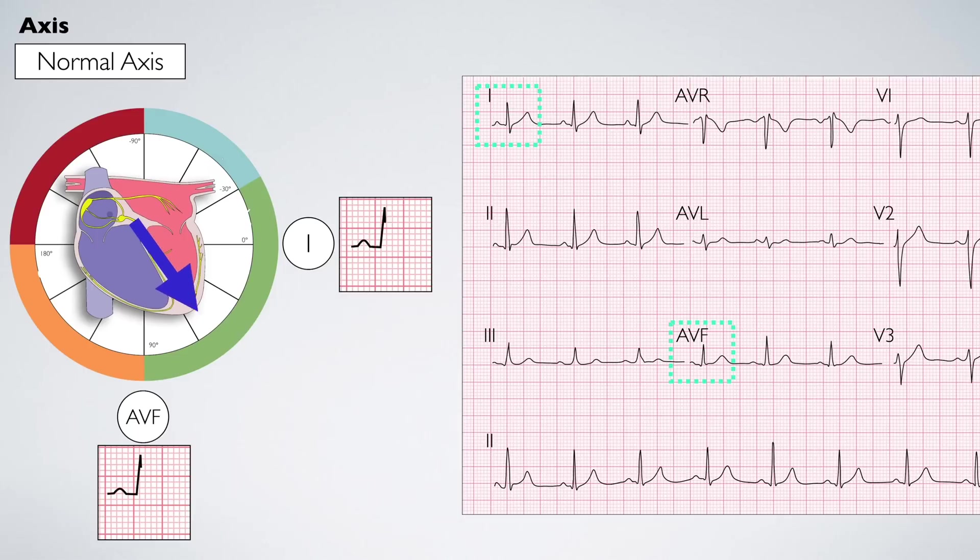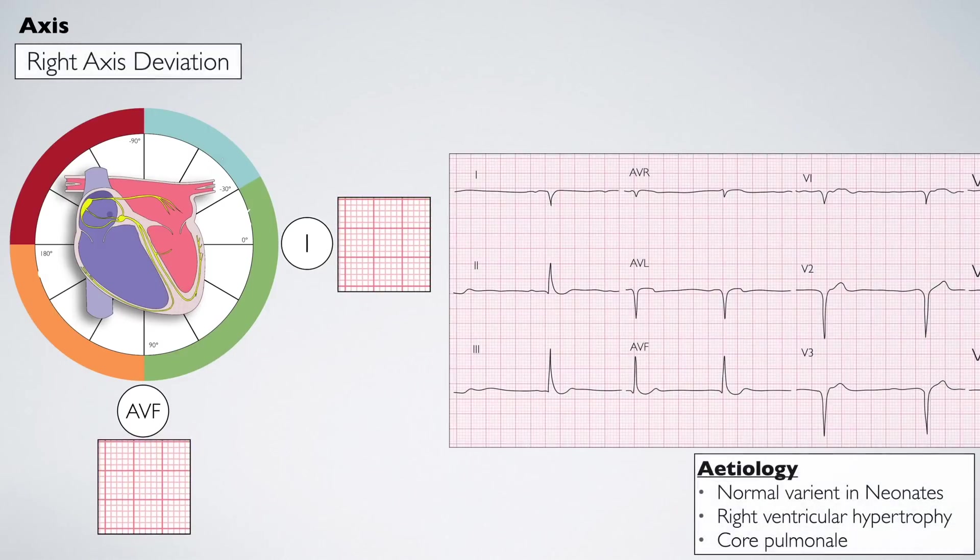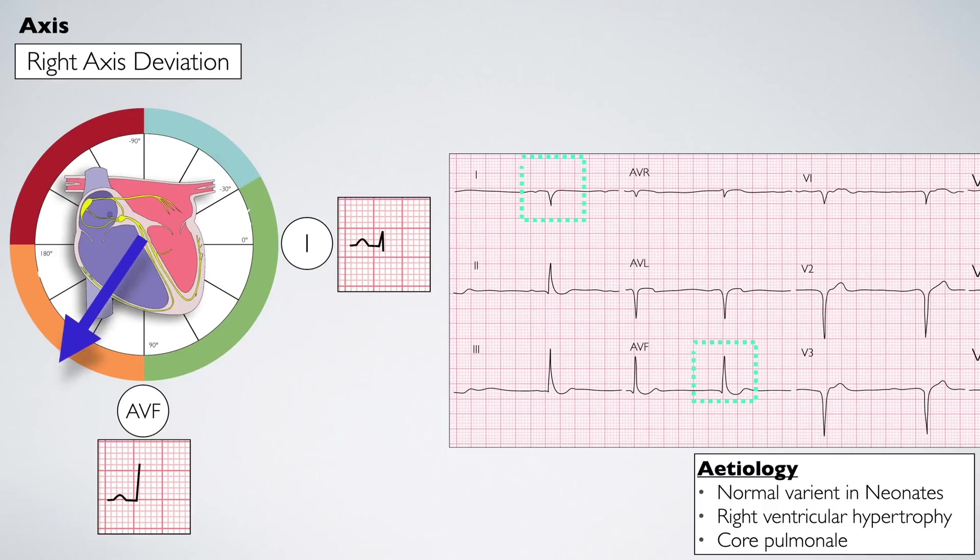The normal axis: electrical activity moves towards both lead 1 and AVF, resulting in two positive QRS complexes. Right axis deviation: electrical activity moves away from lead 1, producing a negative QRS, and towards AVF, making the QRS positive.